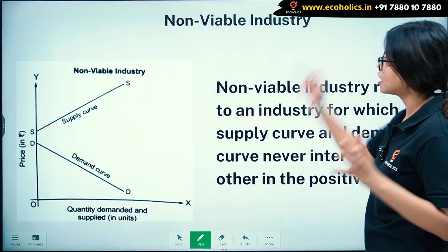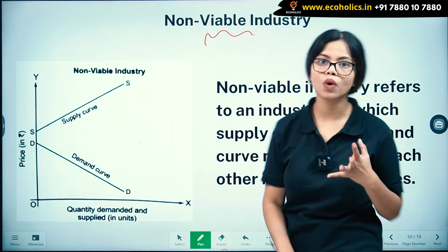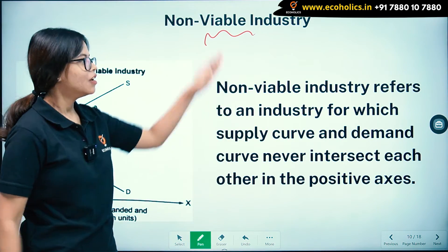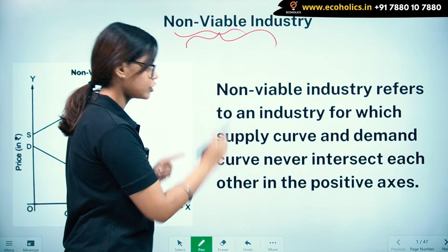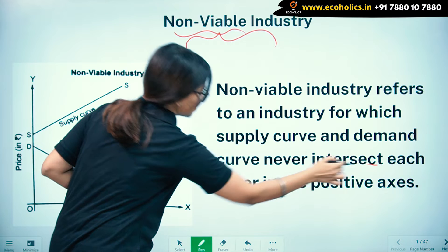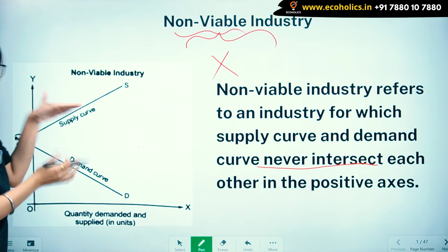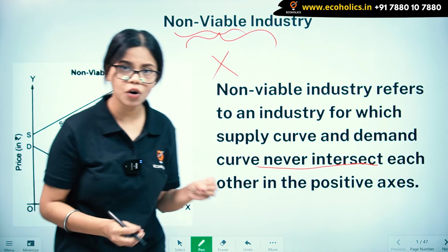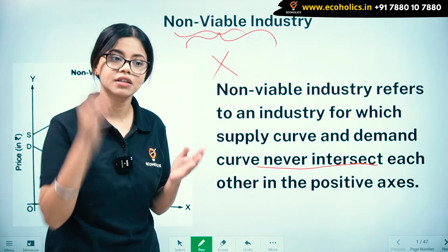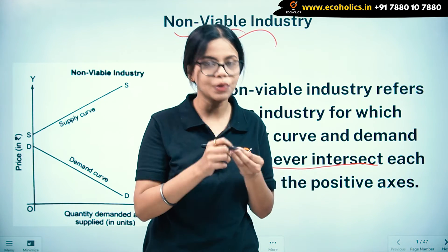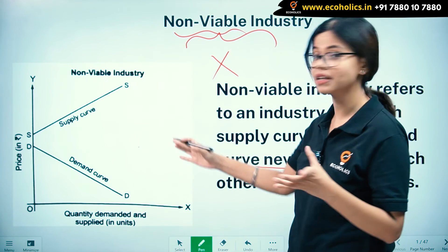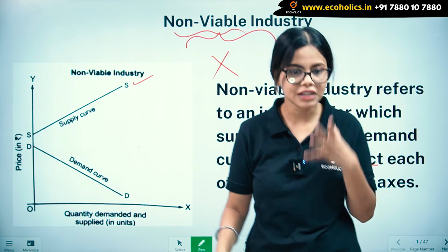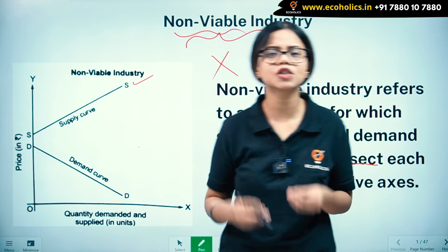Moving further — a non-viable industry is one that is not workable. A non-viable industry refers to an industry for which the supply curve and demand curve never intersect. Looking at the graph, the supply curve and demand curve are not intersecting. For market equilibrium to be formed, you need the intersection of demand and supply curves so that equilibrium price and quantity can be determined. Here the curves do not intersect because the seller does not want to sell at a lower price.